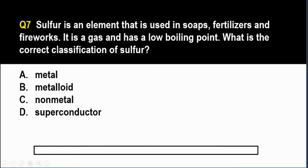Question number 7. Sulfur is an element that is used in soaps, fertilizers, and fireworks. It is a gas and has a low boiling point. What is the correct classification of sulfur? A. Metal. B. Metalloid. C. Non-metal. And D. Superconductor.